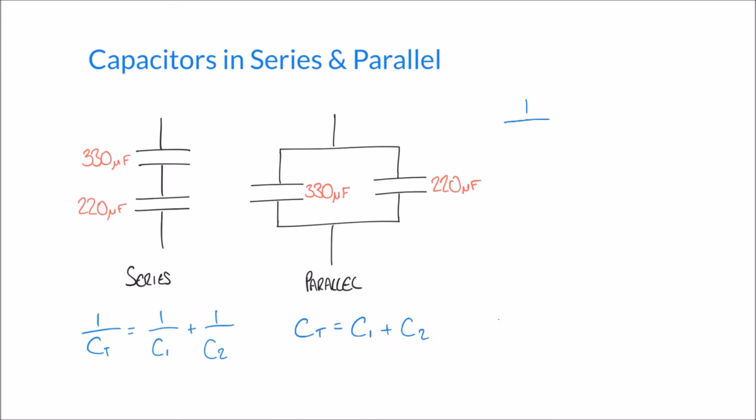Because we can say that 1 over the total capacitance, 1 over CT, is 1 over 330 plus 1 over 220.